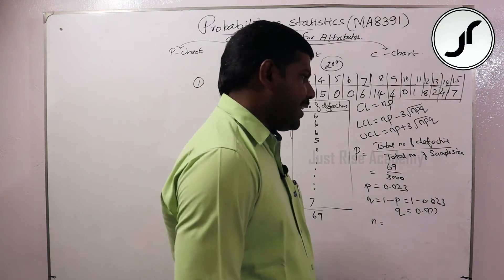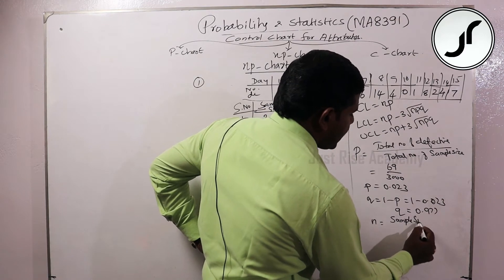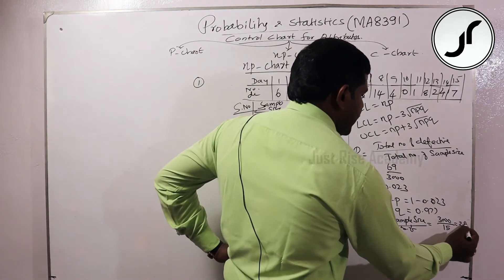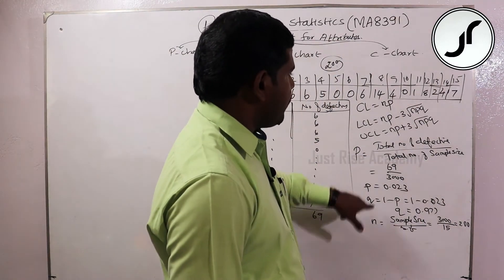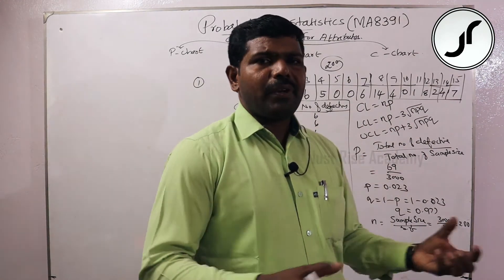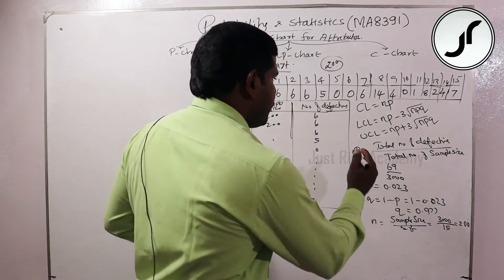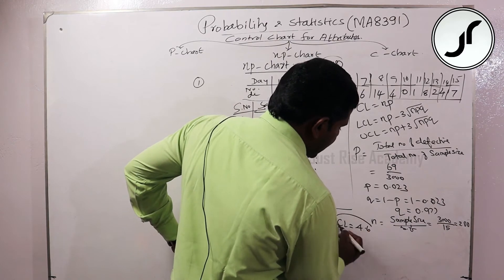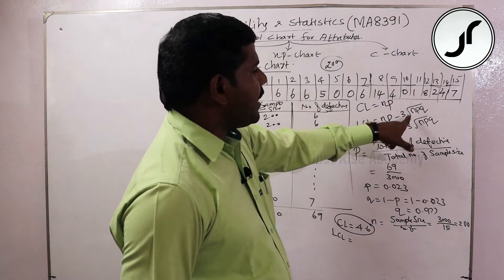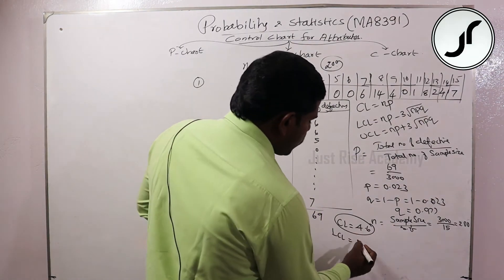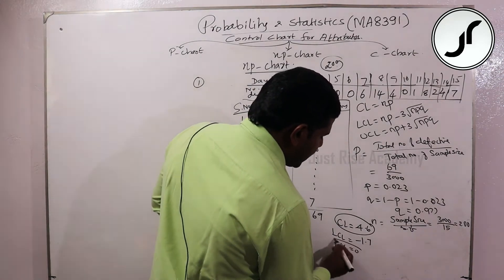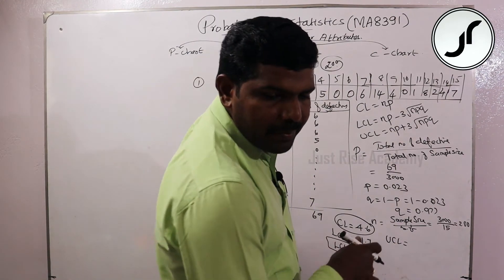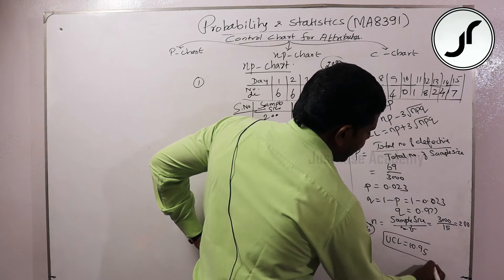n equals sample size divided by number of samples = 3000 divided by 15 = 200. So n = 200. Now, center line CL = np = 200 × 0.023 = 4.6. Lower control limit = np minus 3 × root(npq) = minus 1.7, which is negative, so LCL = 0. Upper control limit = np plus 3 × root(npq) = 10.95.